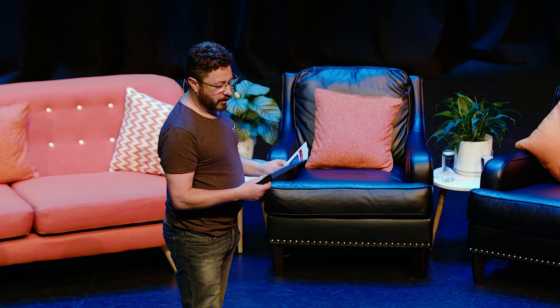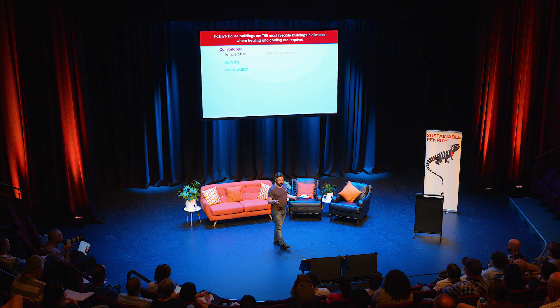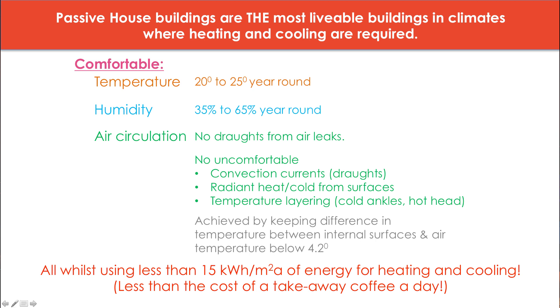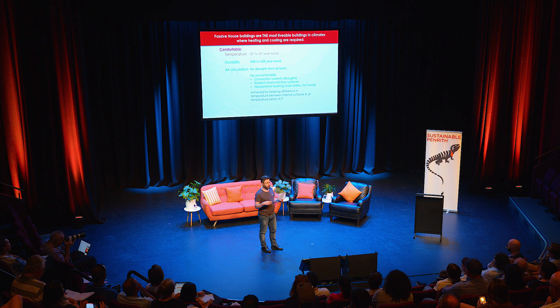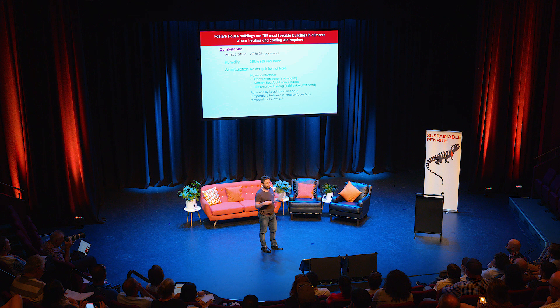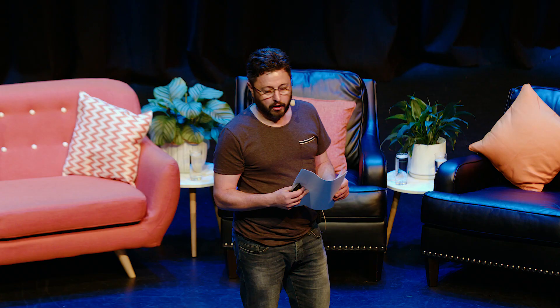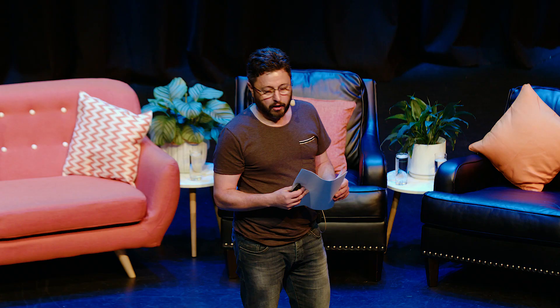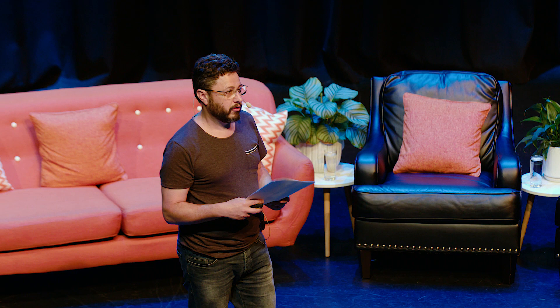In a passive house we set parameters for those three factors. We try and keep our air temperature between 20 and 25 degrees year round. We want our humidity to remain between about 35 and 65 percent year round, and we want to control our air circulation — no drafts from air leaks, no convection currents and no temperature layering. This is achieved by preventing radiant heat or cold from surfaces affecting the air, ensuring the difference between air temperature and surface temperatures is no more than 4.2 degrees. All of this happens whilst using very small amounts of energy, so heating and cooling costs will average out to less than the cost of a coffee a day for an average size home.